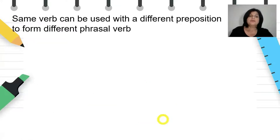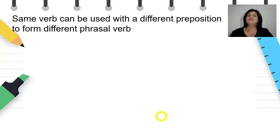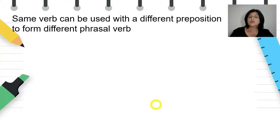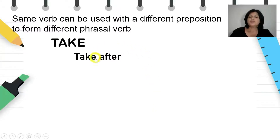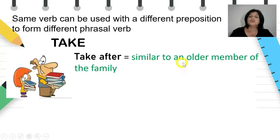Another thing about phrasal verbs is that the same verb can be used with a different preposition to form a different phrasal verb. For example, the verb 'take'. If we add the preposition 'after', we get the phrasal verb 'take after', which means similar to an older member of the family.